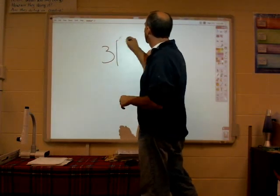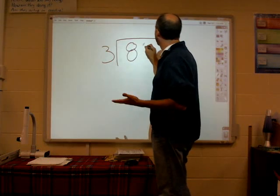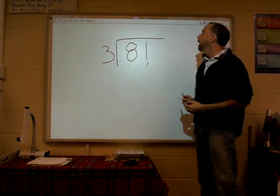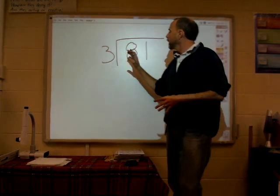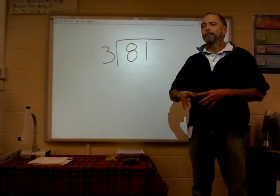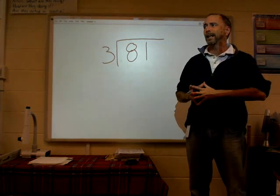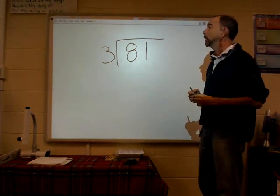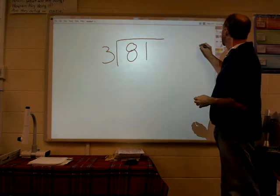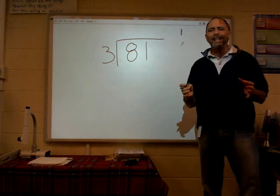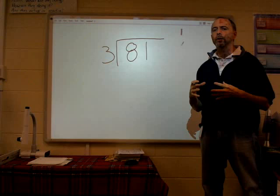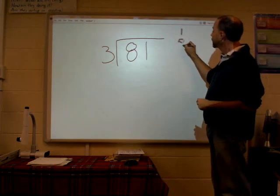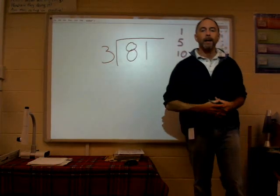Let's start off with something easy and do 3 into 81, because that sounds like a good number. What partial quotient does to begin with is start off with what we call a set of benchmark numbers. These are easy-to-work-with numbers that will help us break down this division problem and get to an answer. I'm going to use 1, 5, and 10 as my basic benchmark numbers.